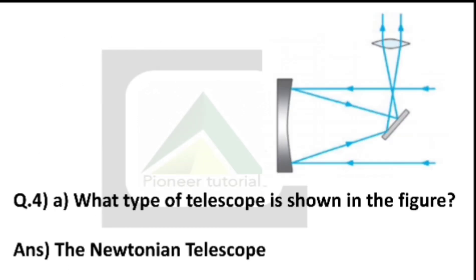Question number 4: See the diagram and observe it properly. You have to name it — what type of telescope is shown in the figure? When you see this diagram and observe it, the telescope shown in the figure is a Newtonian telescope.